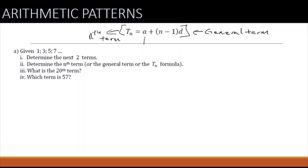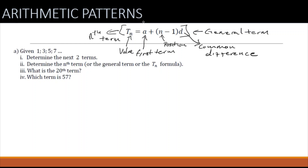In the formula we have various components: 'a' is the first term, 'tn' is the value of a term, 'n' is the position of the term, and 'd' is the common difference. We use these elements together to form the nth term — a generalized term — which if we substitute our components can give us different values for every position in the sequence.